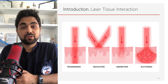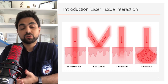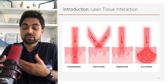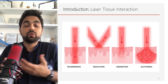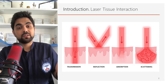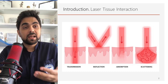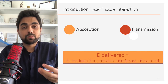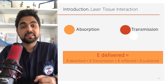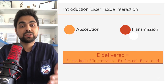Then we have scattered energy, which is a waste of energy, and reflected energy, which is also a waste of energy. This is why we must wear protective glasses in general — because some energy will be wasted and simply reflected by surfaces. So these are the four energy divisions when the laser hits our targeted tissue. Clinically, the most important for us are absorption and transmission. Absorption is related to the efficiency of the cut.